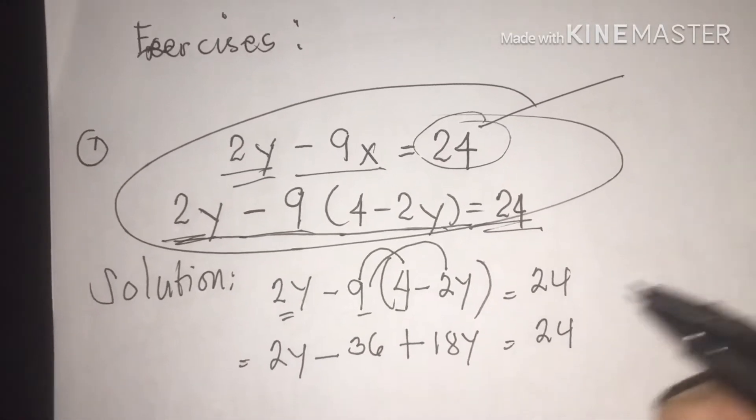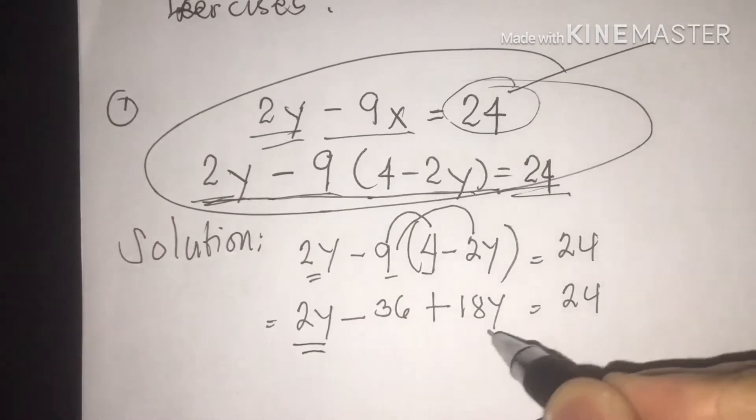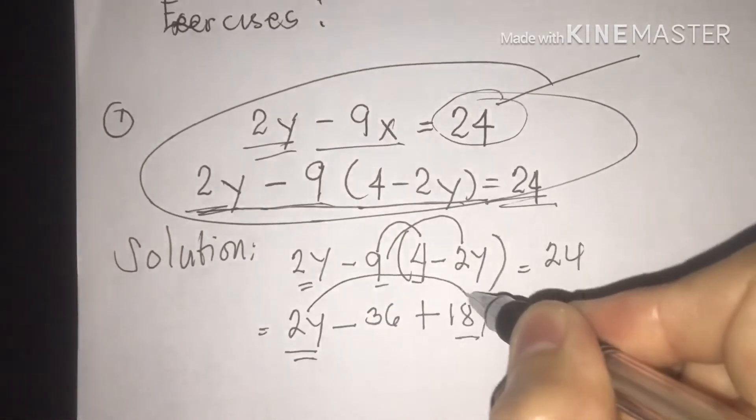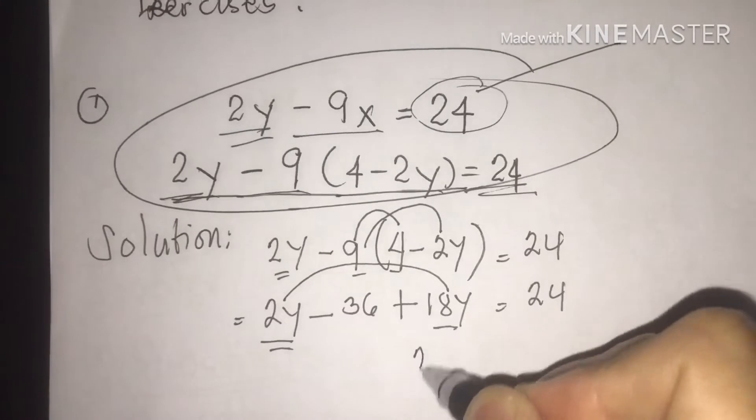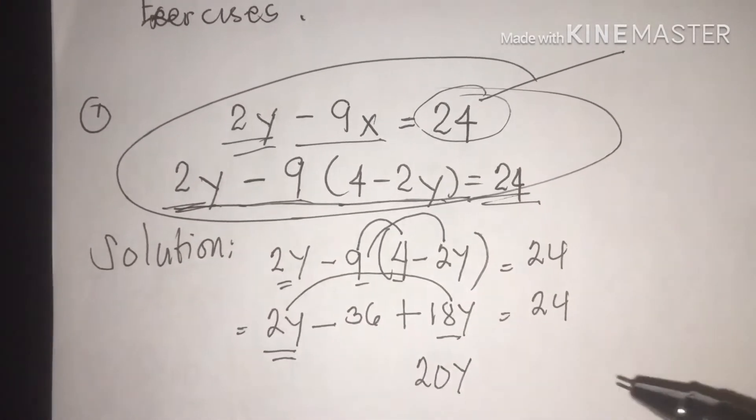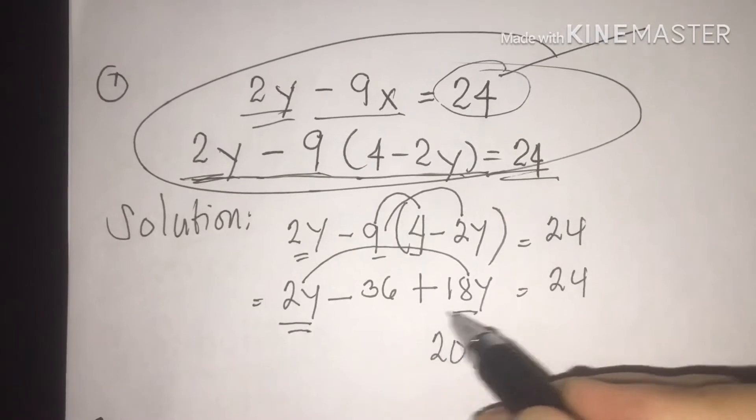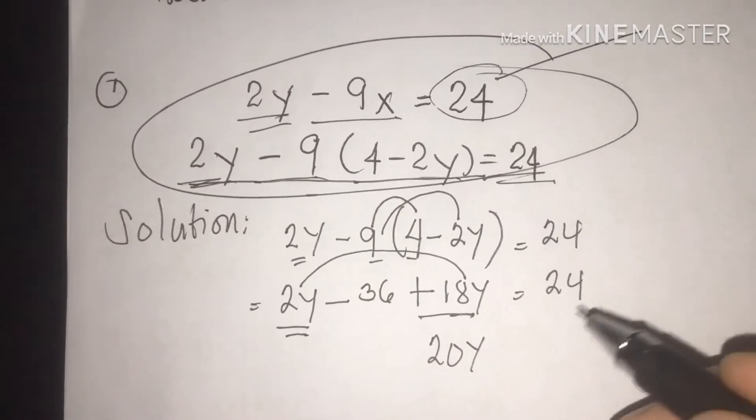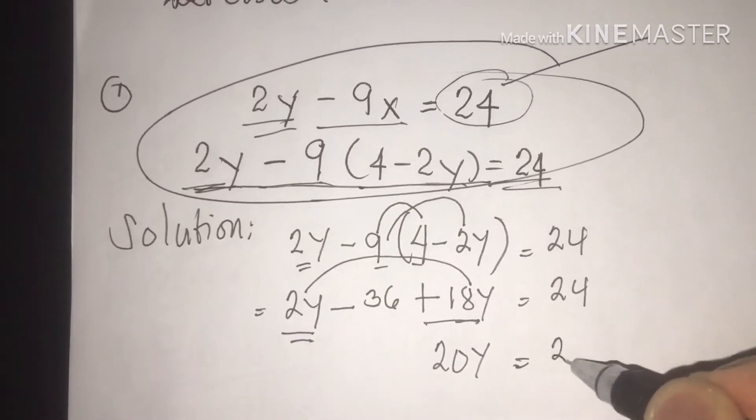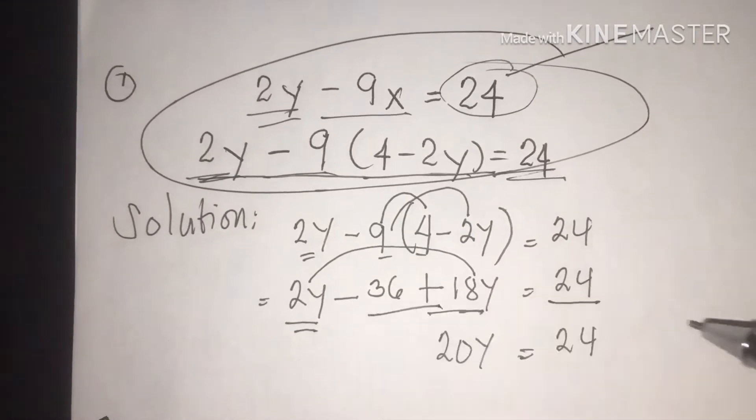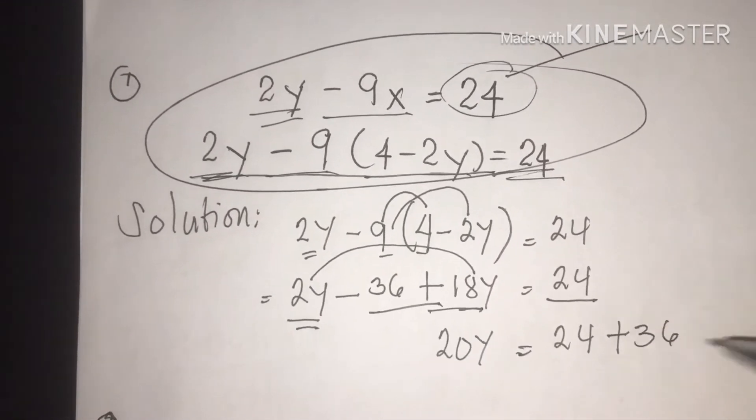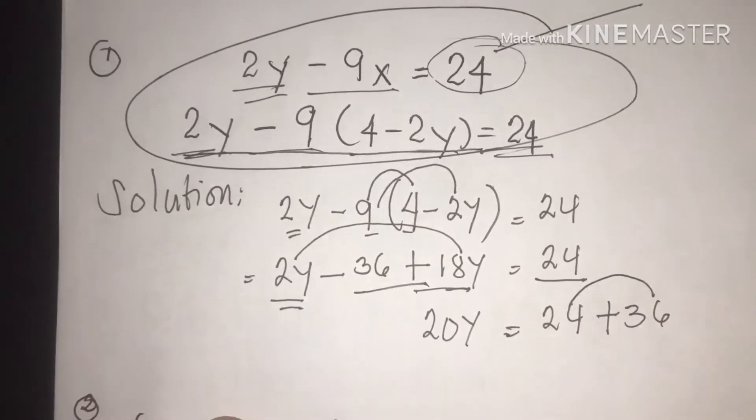Substitute again. Then, 2y and 18y, we are going to add, the result will be 20y. Plus 2y plus 18y, we have 20y, is equal to 24. Plus 36 class. Then you are going to add that one.